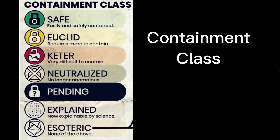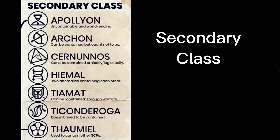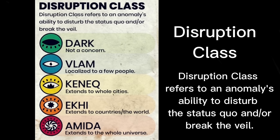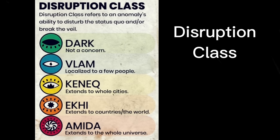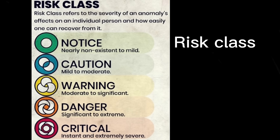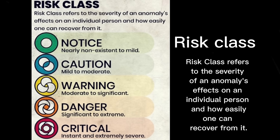But there are more object classes, if you didn't know that. Containment class, Secondary class, Disruption class — Disruption class refers to an anomalous ability to disturb the status quo and or break the veil. Risk class — Risk class refers to the severity of an anomaly's effects on an individual person and how easily one can recover from it.